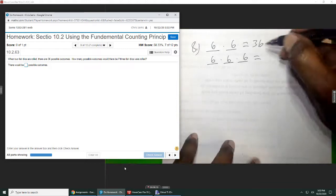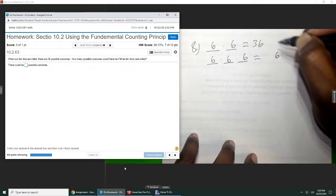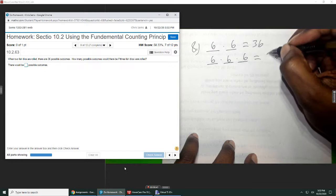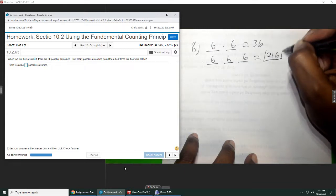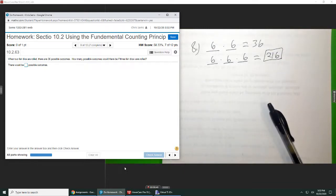six times six is 36, times six is 216. So we get 216 when we do six times itself three times.